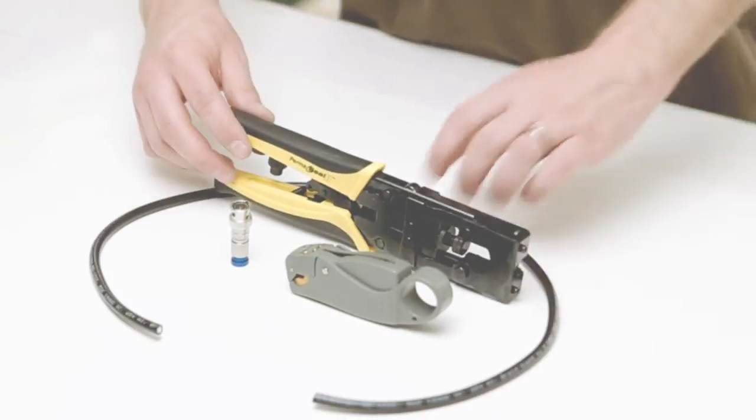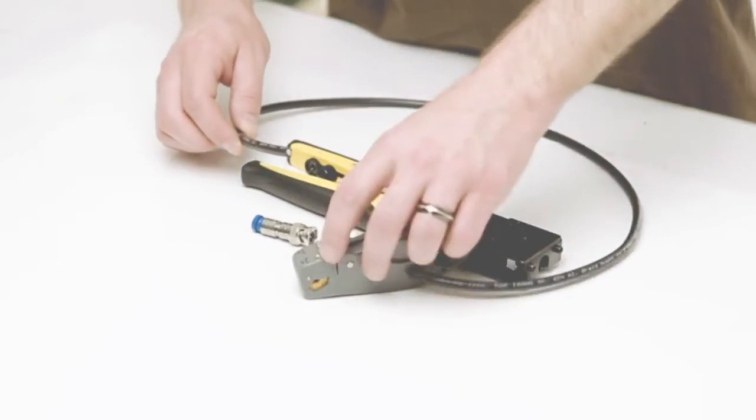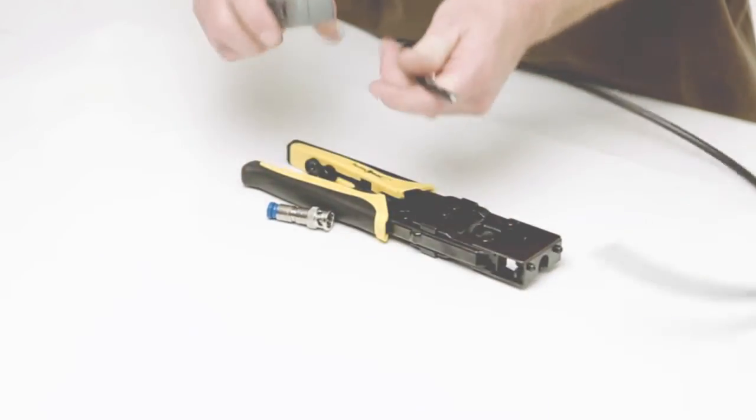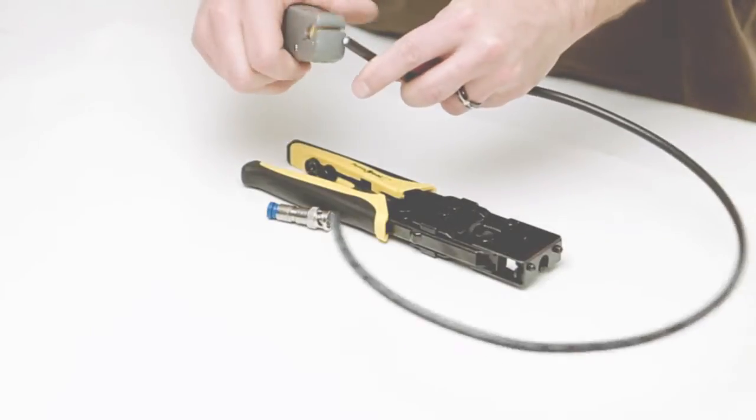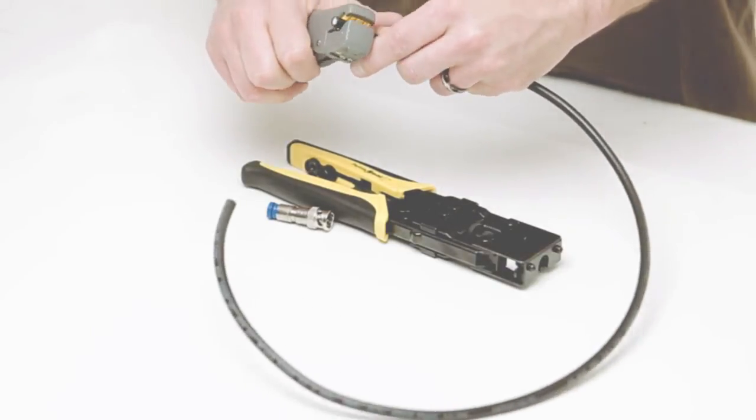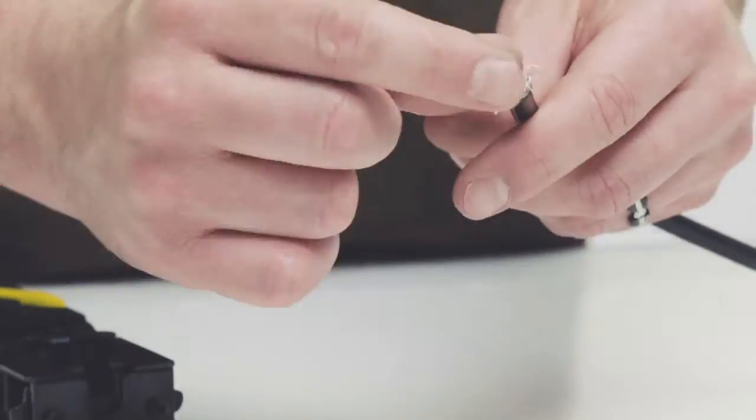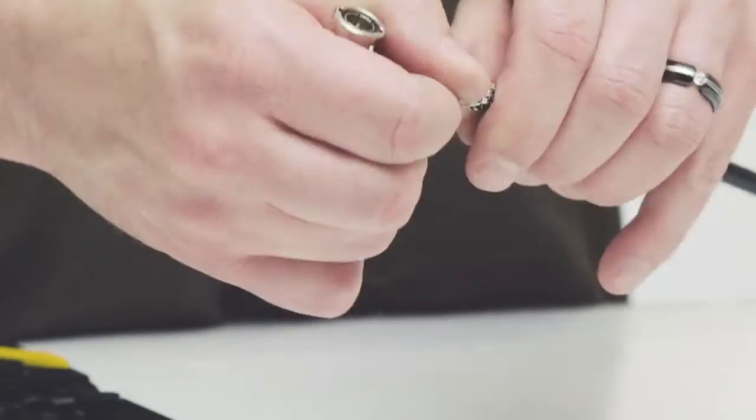To begin, remove the outer jacket and inner dielectric of the cable. By using a coax strip tool, we can remove both at the same time. Simply rotate the tool around the outside of the jacket, then fold the braid on top of the jacket.